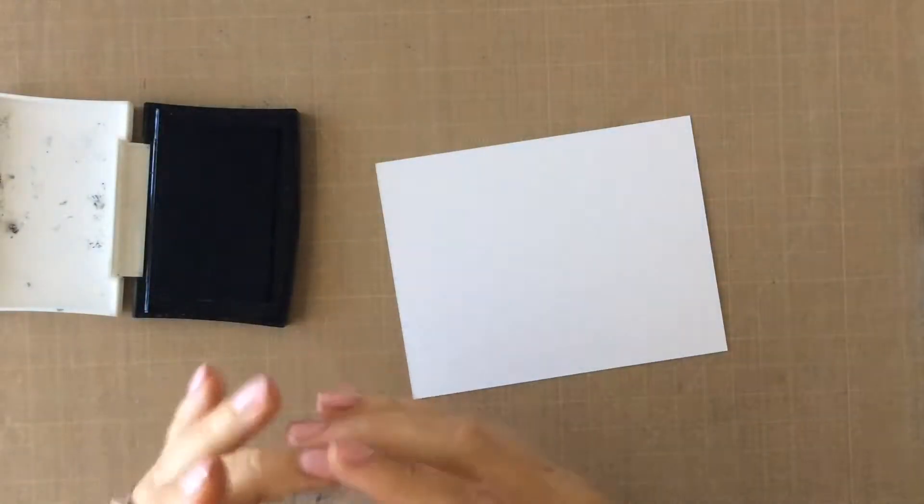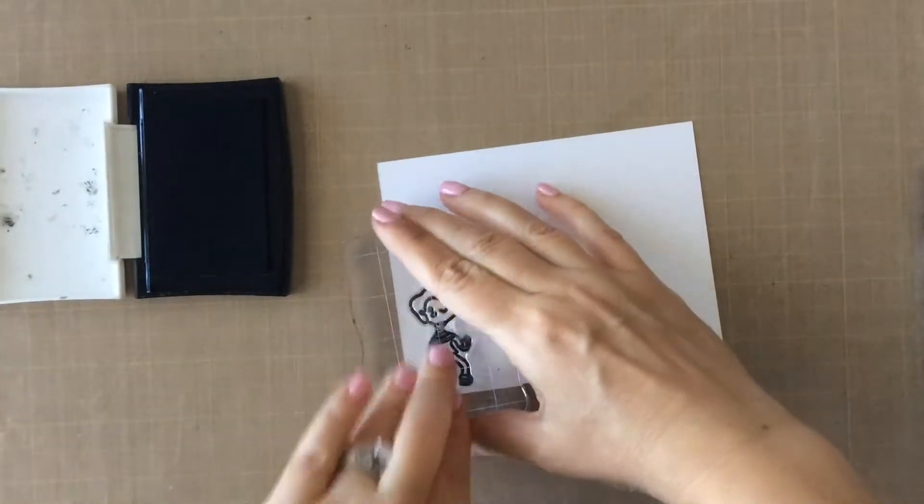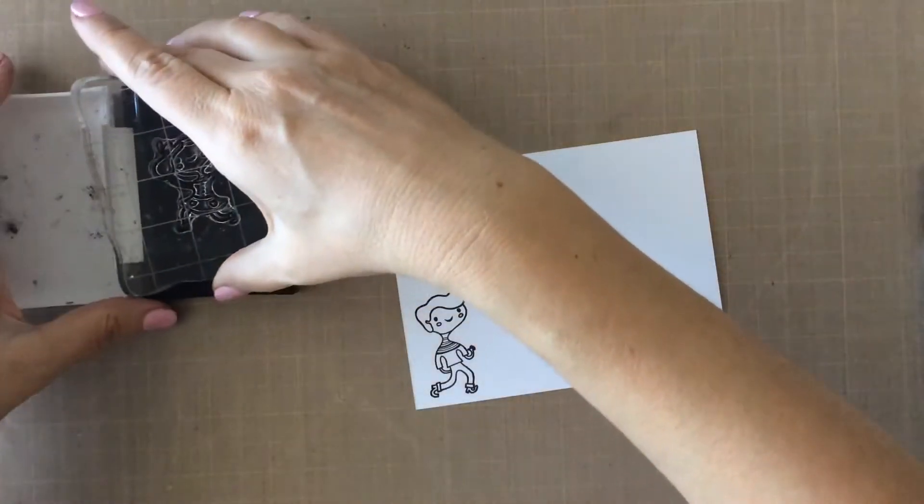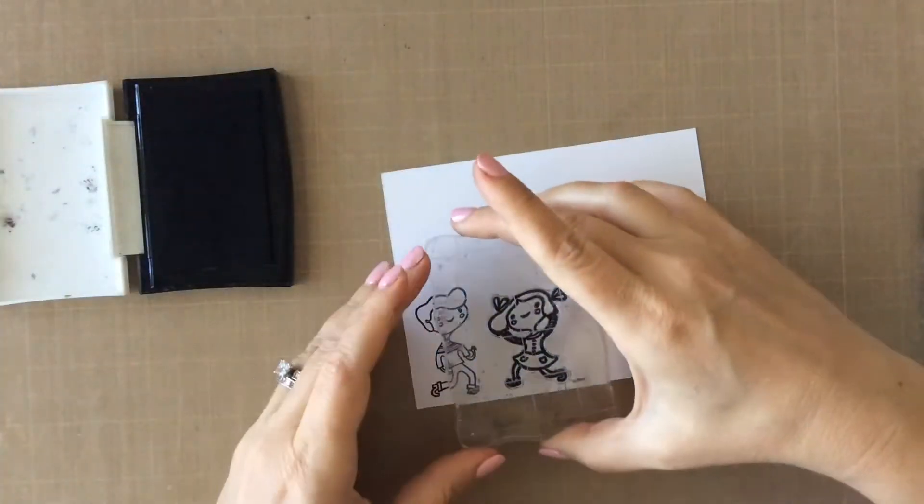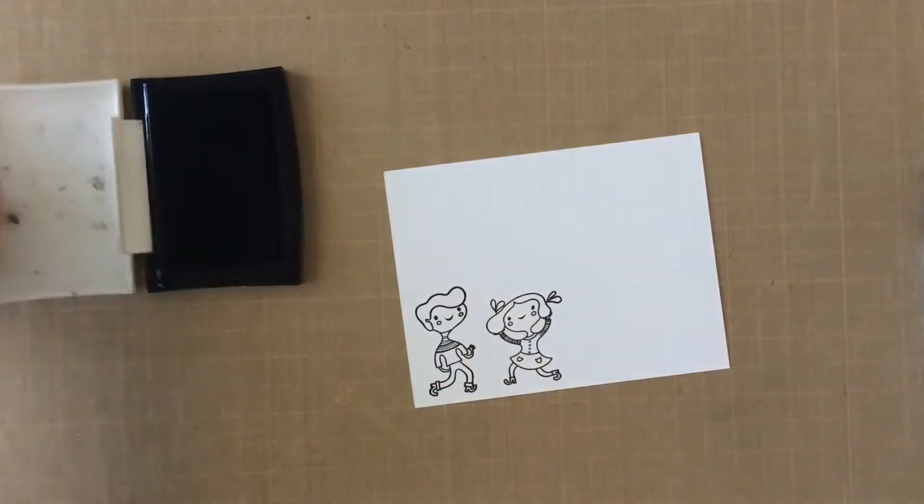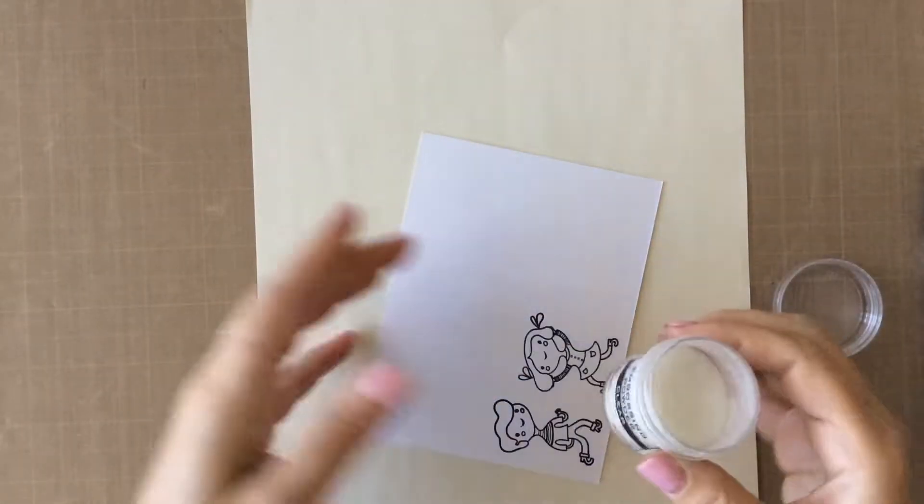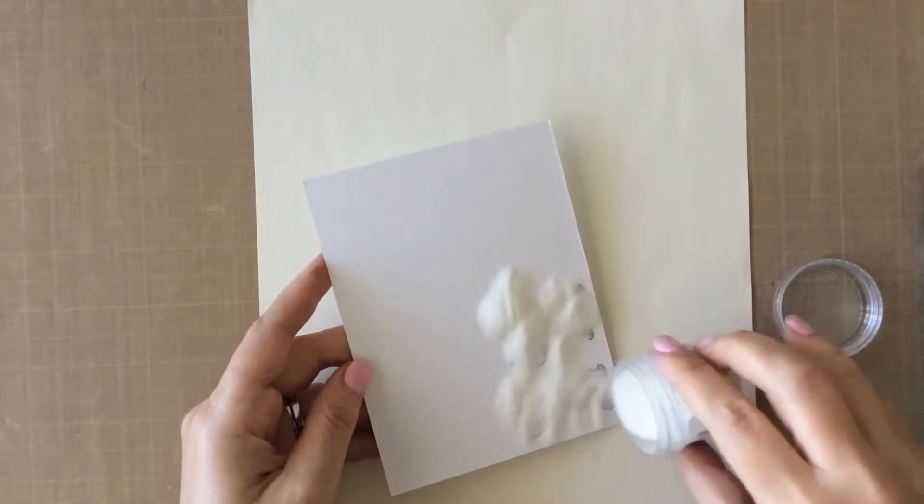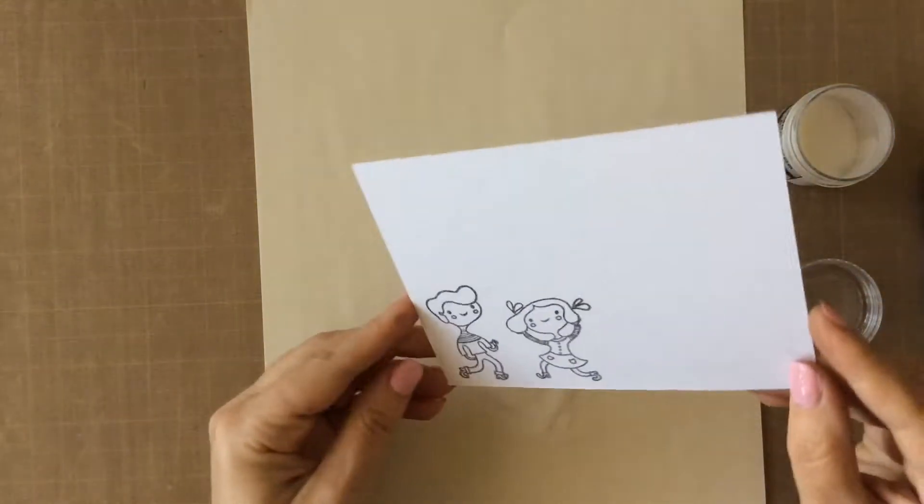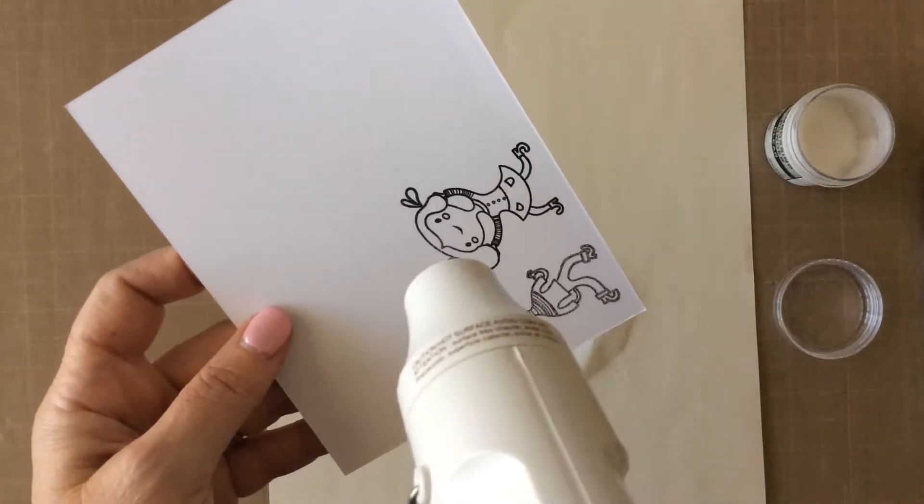And now I'm going to take some more watercolor paper here, and some VersaFine Onyx Black ink, and stamp out one of those boys and one of the girls from the Hooray stamp set. And then I'm going to heat set those using some clear embossing powder by Ranger. This is one of my favorite things when I'm watercoloring is to use embossing powder because it creates a little bit of a well there when you're watercoloring.